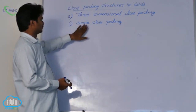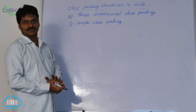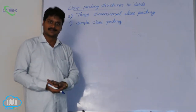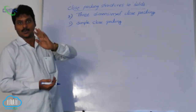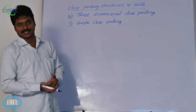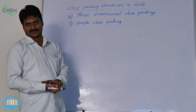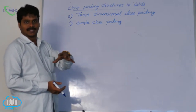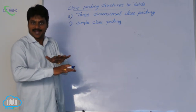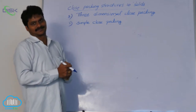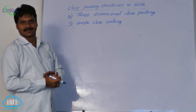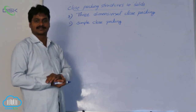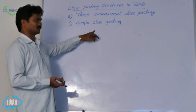First, let us see what about simple closed packing and how it is formed. A three-dimensional closed packing structure is formed when one layer of spheres is placed one over the other. When the square closed packing layers are placed one over the other, this simple cubic closed packing will be formed.